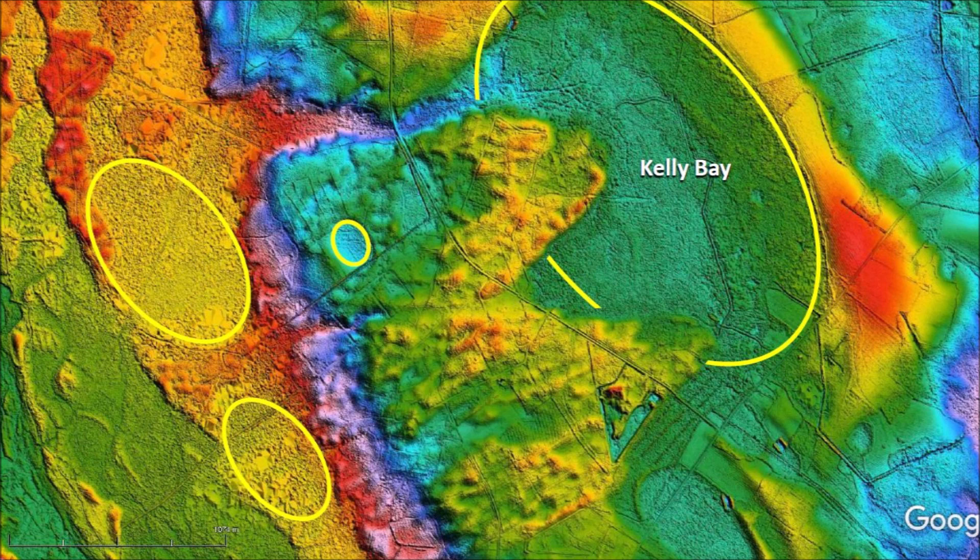This scenario follows the law of superposition. Kelly Bay was in place first, the bays by the river were in place next and created the splashed chevrons, and finally a small bay was created on top of the splashed chevrons.